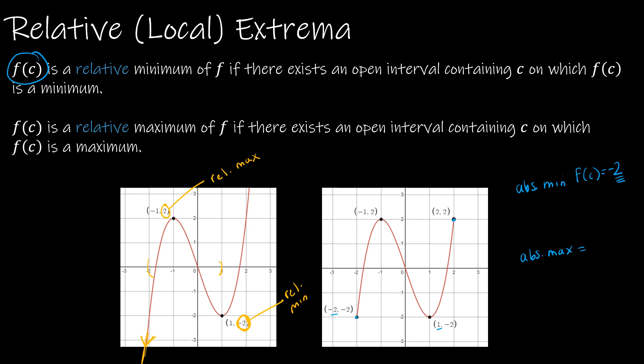The absolute max is, again, the greatest y value, which is two. And then, again, it occurs in two places, but it is the absolute max of two. So even though this is relative to things around it, this would still be considered an absolute max because we're on a closed interval.